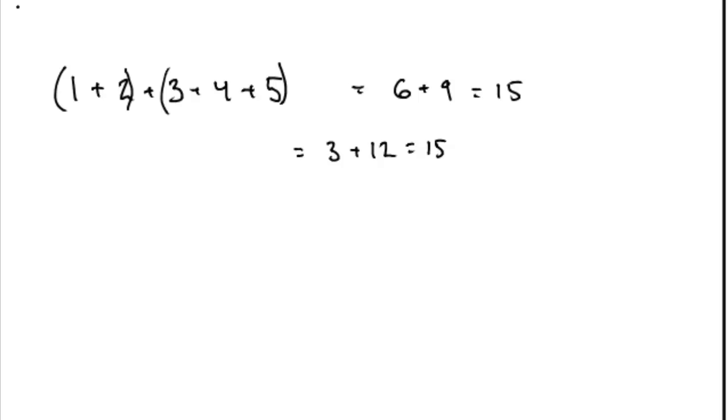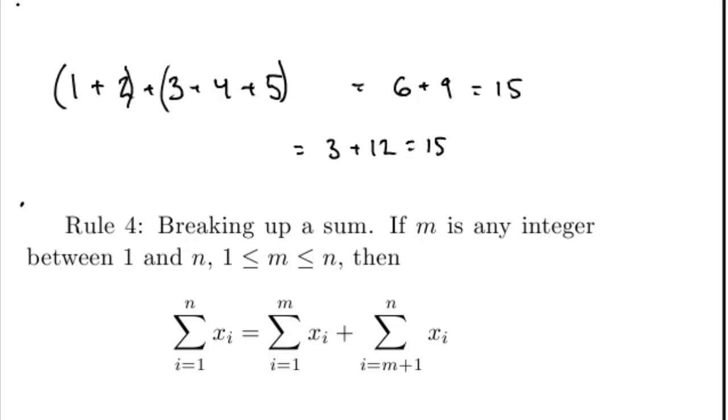Technically, we say that addition satisfies the associative rule. Generalizing this to sums, if I need to sum n elements, I can break up this sum any way I like.